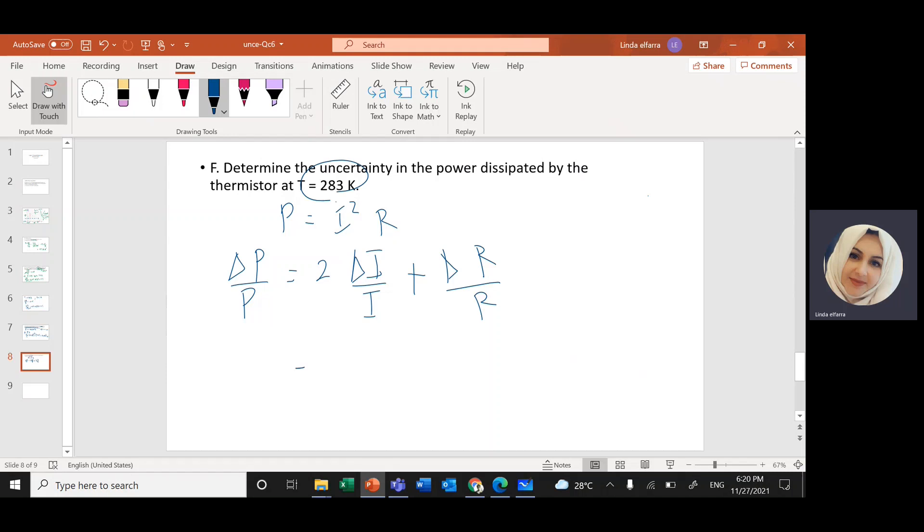So this one will be two delta I is 0.01 milliamp divided by I 0.78 milliamp and milli they cancel. That's why I didn't put it milliamp and milli they cancel out plus delta R the uncertainty in R at this temperature, we found it to be 0.4 from the previous part of the question divided by R is 7.5. And when you calculate this one, you should get 7.8%. That's it.